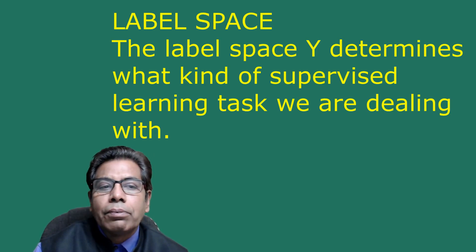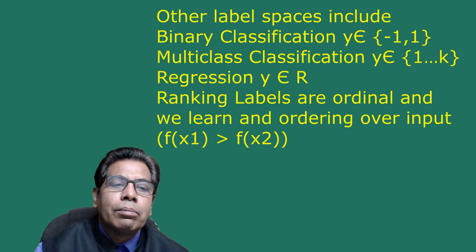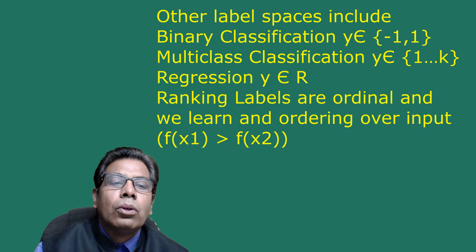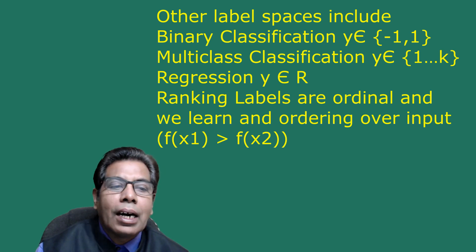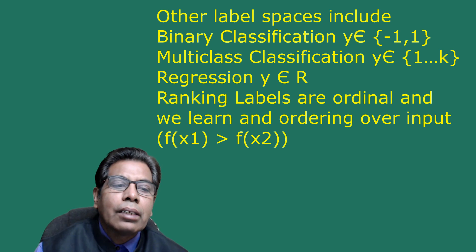The label space Y determines what kind of supervised learning task we are dealing with. In this class we focus on binary classification and argue that most other classification tasks can be reduced to binary classification. Other label spaces include: binary classification where Y ∈ {-1, ..., K}; regression where y is a real value, Y ∈ ℝ; and ranking where labels are ordinal and we learn an ordering over inputs, such as f(x₁) > f(x₂) and so on.